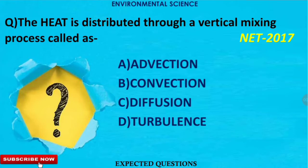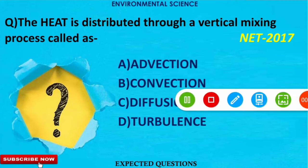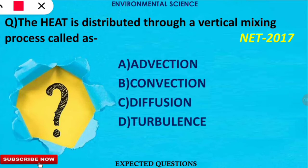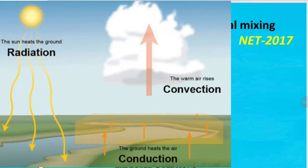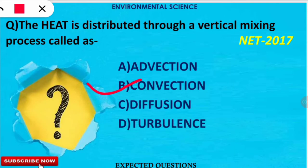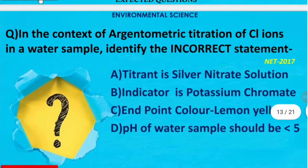The first question is: heat is distributed through a vertical mixing process called what? The correct option is option B — convection. Convection is the process in which hot air rises up and cold air comes down, as shown in the picture. This is how heat is distributed.